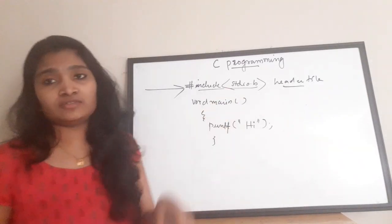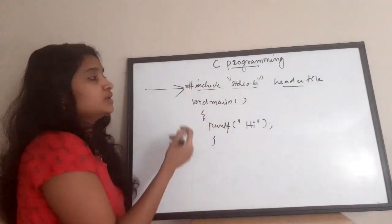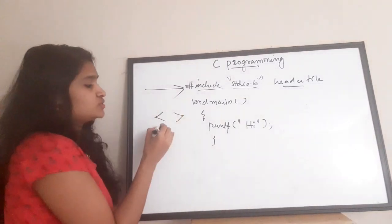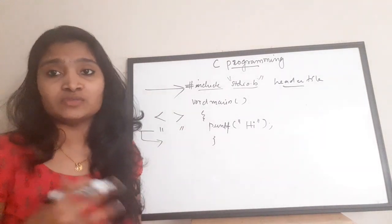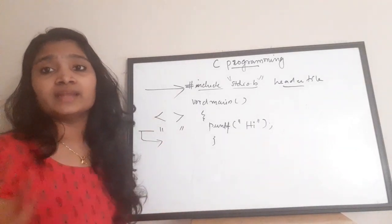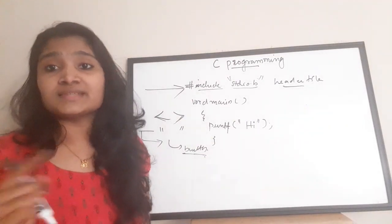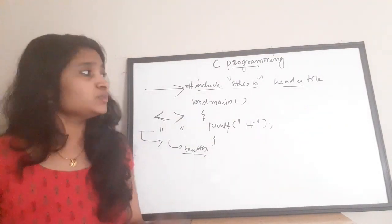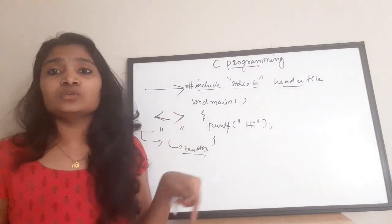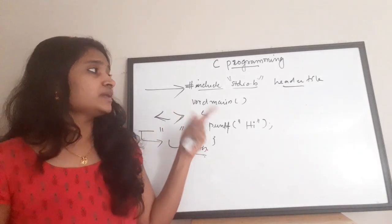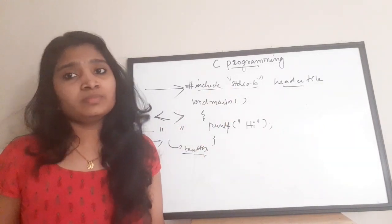The next question is: what is the difference between using angular brackets and double quotes for a header file? When double quotes are used, the system first searches for the header file in the directory where you are programming. If it is not found there, it goes to the built-in include path. When angular brackets are used, it directly searches the built-in include path. Normally we use angular brackets for standard header files.